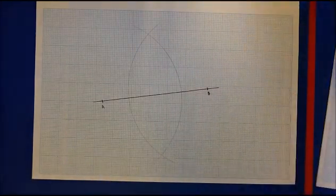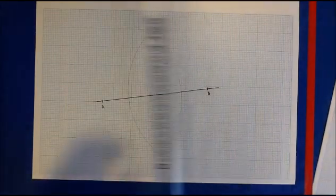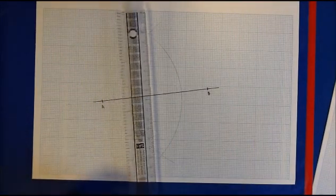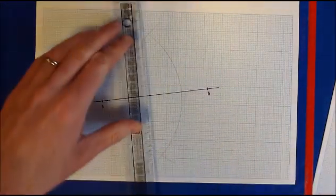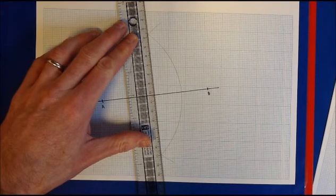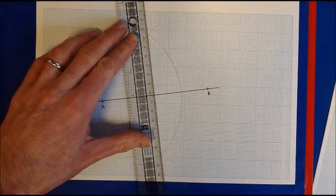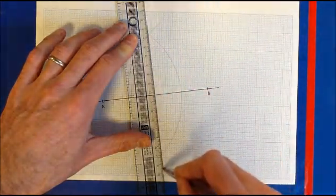Now we're ready to draw the perpendicular bisector. Put the ruler on so that it goes from where these two arcs at the top cross and where the two arcs at the bottom cross. Put my ruler on, line it up carefully, and draw a straight line there.